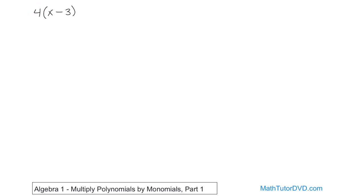This first term is a constant — it's a number — but it's a very simple monomial, just one term. You're going to take it and distribute it into each term. So 4 times x gives you 4x, and 4 times negative 3 gives you negative 12. So you have 4x minus 12. That's the simplest type of problem where you're taking a polynomial and multiplying it by a monomial.